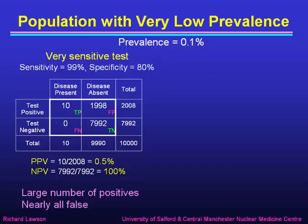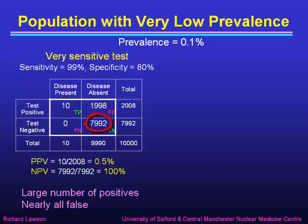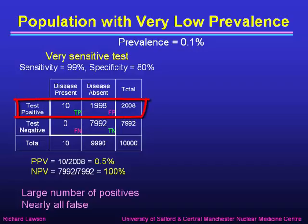The positive predictive value is 10 over 2,008, which is 0.5% — a rather poor positive predictive value. The negative predictive value is 7,992 out of 7,992, which is 100%. But out of 2,008 positive results, 1,998 were false. Only 10 of those 2,000 positive results were actually true positives.